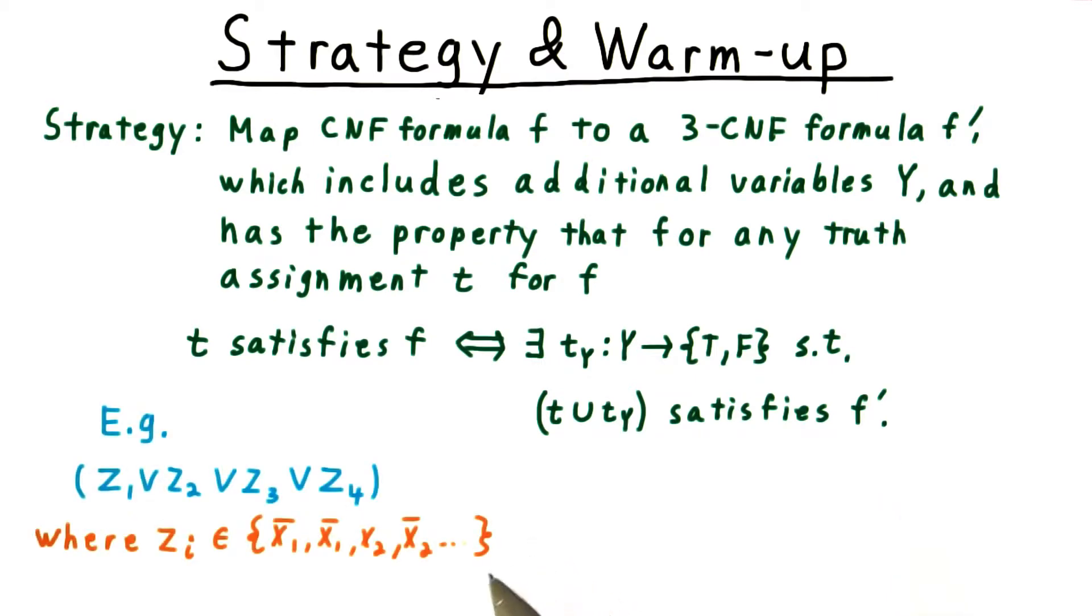Let's illustrate such a mapping for a simple example. Take this disjunction of four literals. Note that the zi are literals here, so they could be x1, x1 bar, etc. Remember that disjunction means logical or. So this whole clause is true if any one of the literals is. We will map this clause of size 4 into two clauses of size 3, by introducing a new variable y, like so.